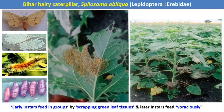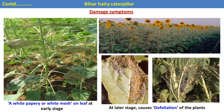The larvae then go into pupation in the soil. In severe infestation of Bihar hairy caterpillar, leaves initially show white papery or white mesh patches at an early stage, and at a later stage, complete defoliation of the sunflower plant occurs.